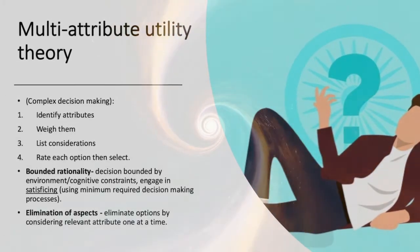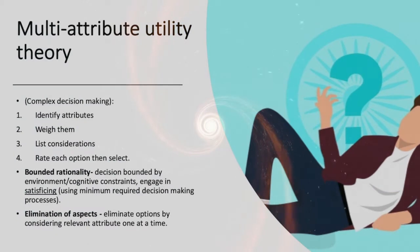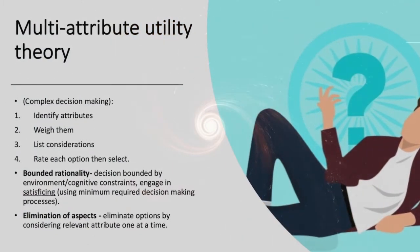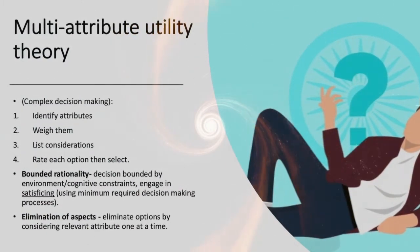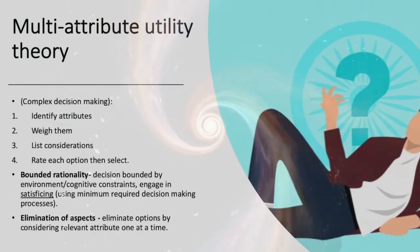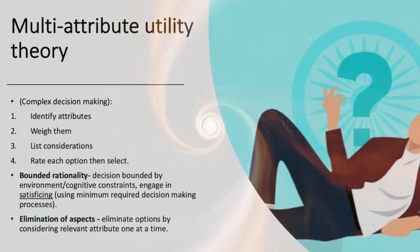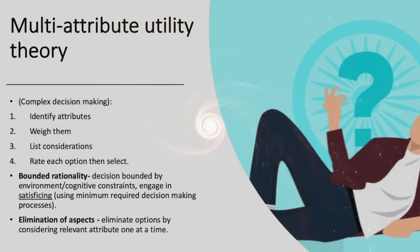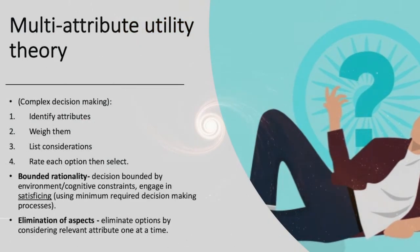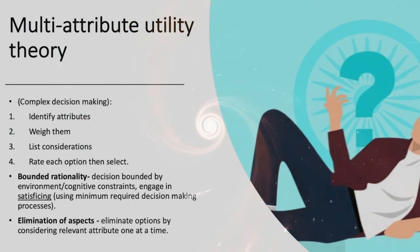Individuals must engage in satisficing, where they use minimum required decision making processes. There is also elimination of aspects, in which individuals eliminate options by considering relevant attributes one at a time.